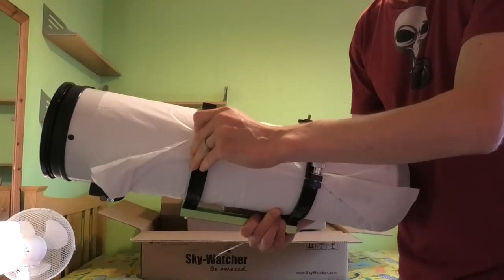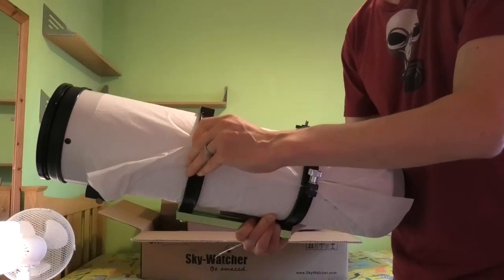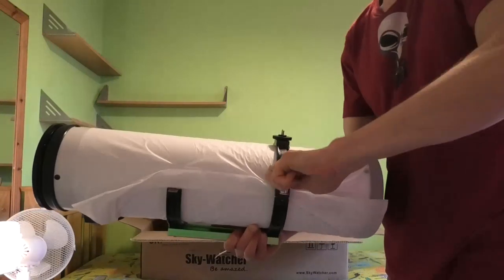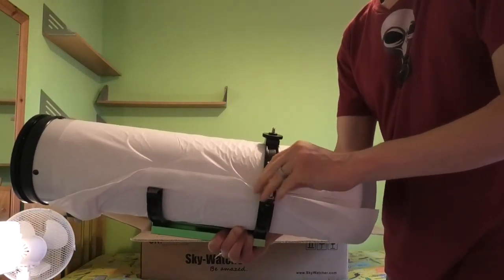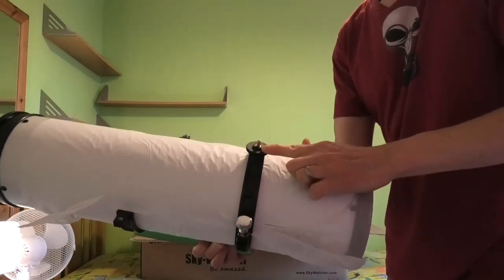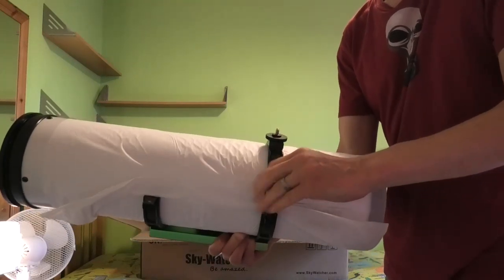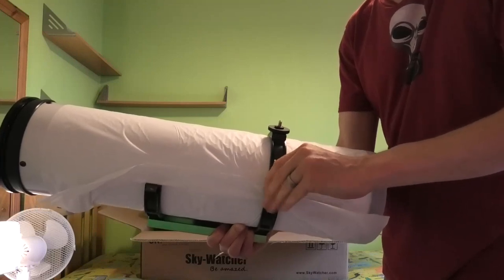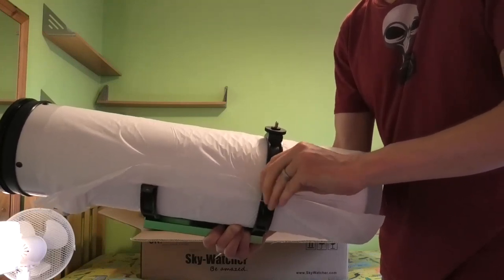We'll just pop the rings off to remove the paper. There's a camera mount there for attaching something like a DSLR for piggybacking if you want to do some wide field astrophotography.